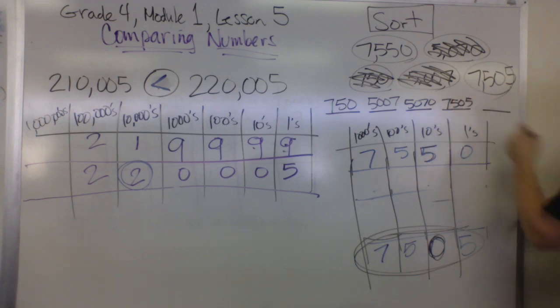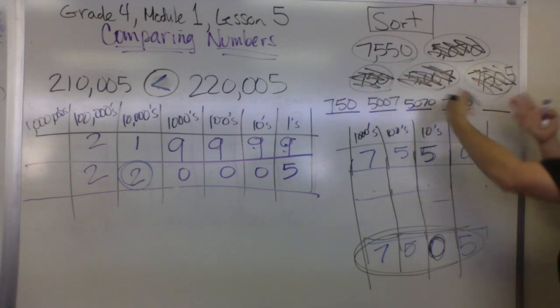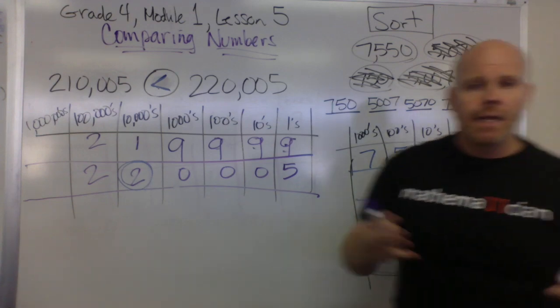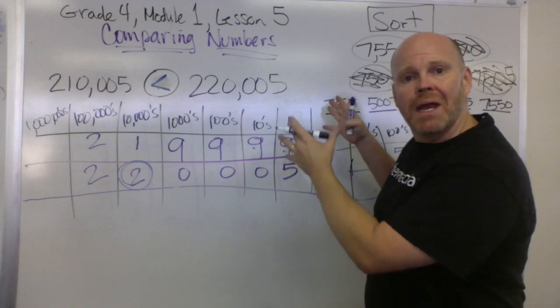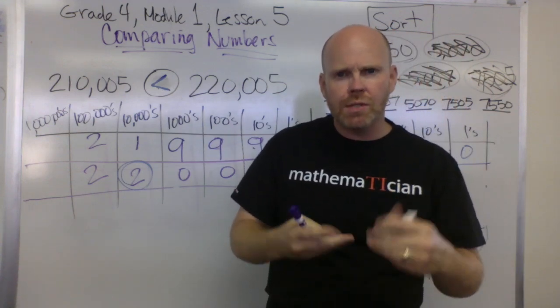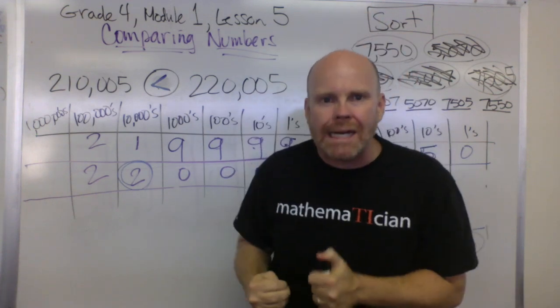And that's this guy, and by process of elimination, 7,550—seven thousand five hundred and fifty—is our greatest. That is how we're going to be comparing numbers in Engage New York, using place value understanding rather than tricks.